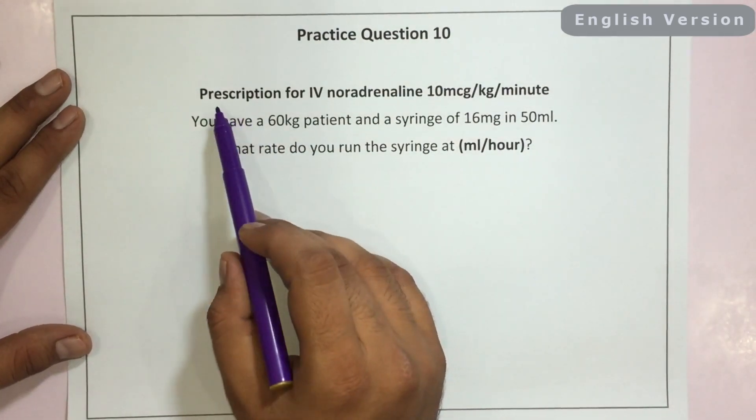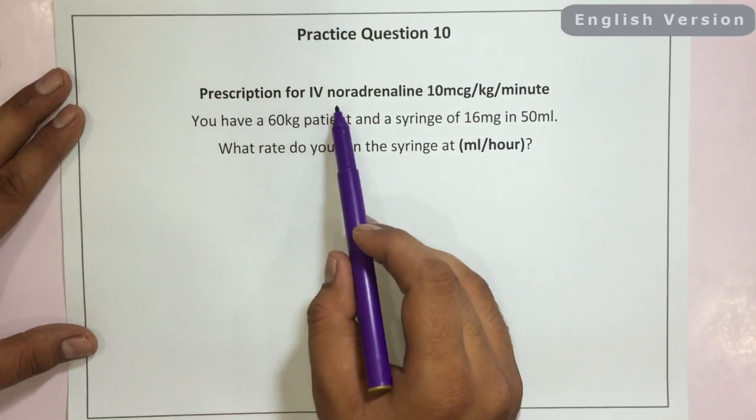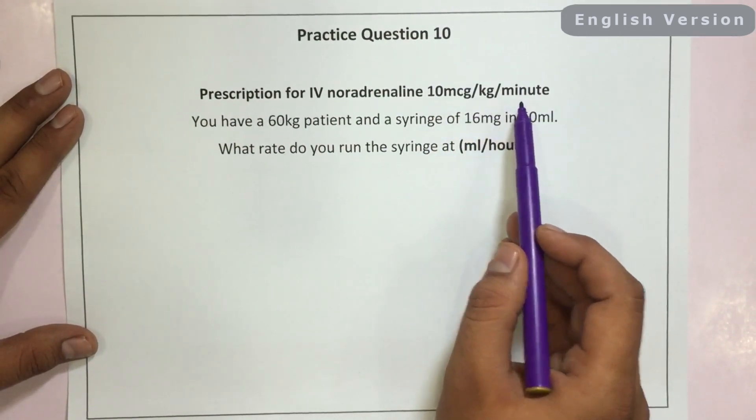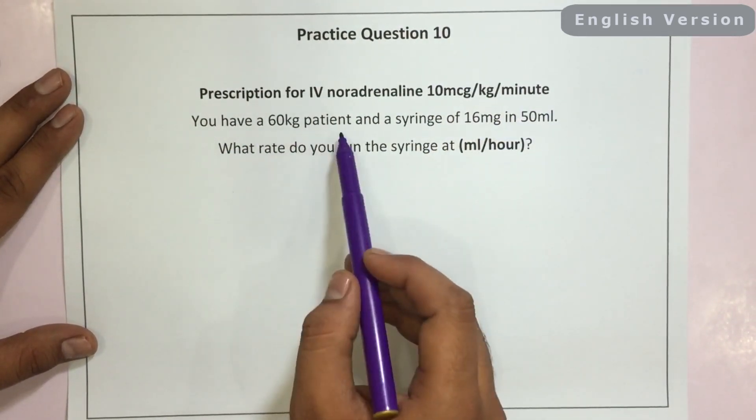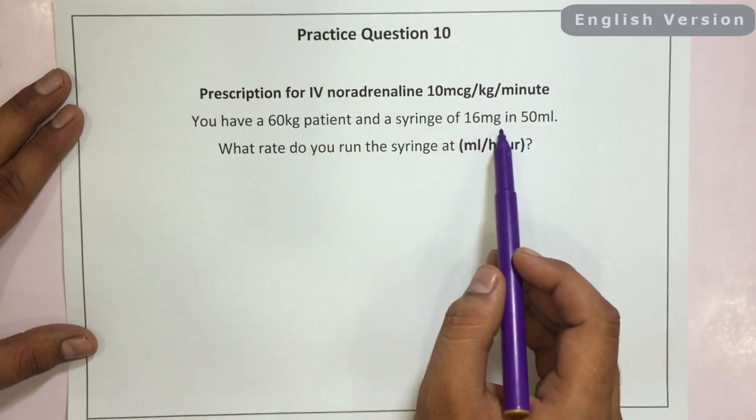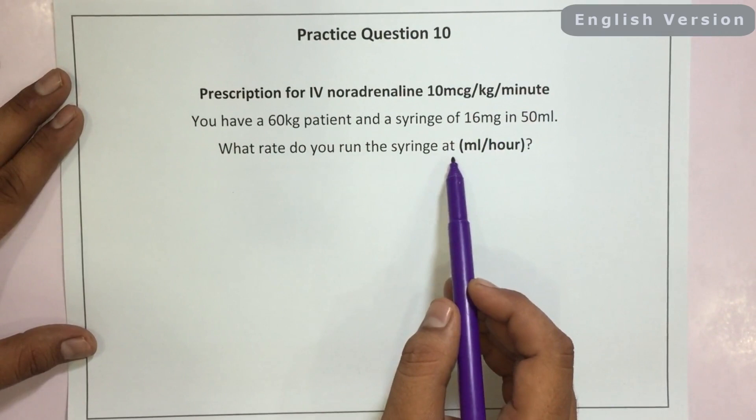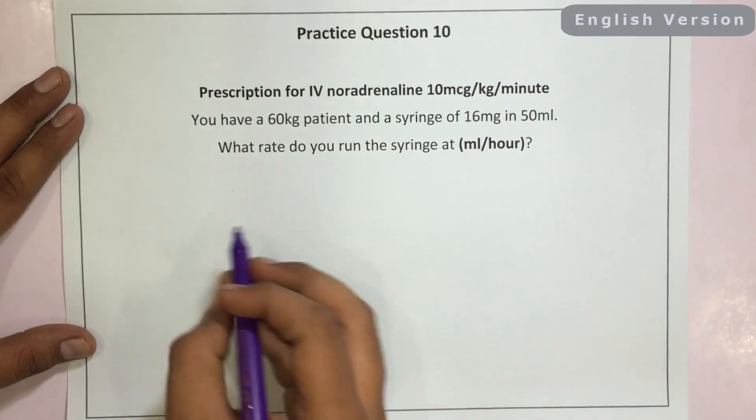The question states, a prescription for IV noradrenaline 10 microgram per kg per minute. You have a 60 kg patient and a syringe of 16 mg in 50 ml. What rate do you run the syringe at in ml per hour?